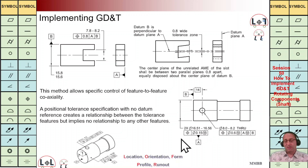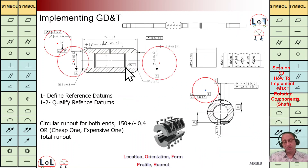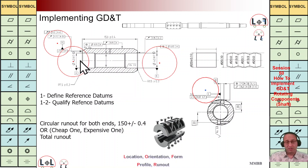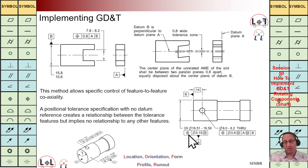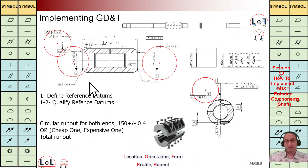We can implement this scenario for this example because it is not that long, and the size of the left-hand side and right-hand side holes are exactly the same. We can use the same scenario — have the two holes defined by size and use the diameter symbol without any reference to make coaxiality between these two ends.